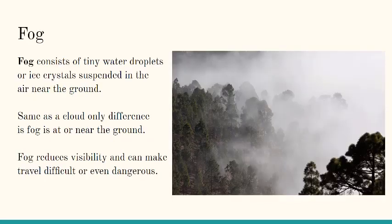Fog consists of tiny water droplets or ice crystals suspended in the air near the ground. Fog is the same as a cloud — the only difference is fog is at or near the ground, so fog is much lower. Fog reduces visibility and can make travel difficult or even dangerous.